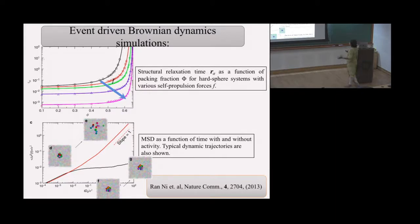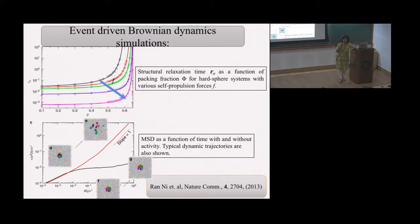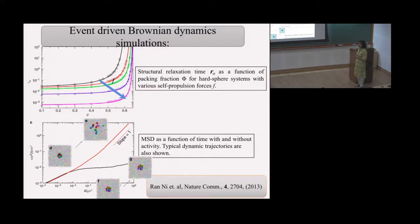Before our data, let me show some previous theoretical work. Event-driven Brownian dynamics simulations by Randy et al., seven years ago, had active particles each acted upon by a self-propulsion force. They calculated trajectories, overlap functions, and relaxation times, and saw that as self-propulsion forces increased, the timescales go down — fluidization of the suspension. This was done for several different volume fractions.